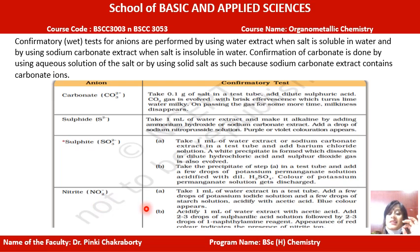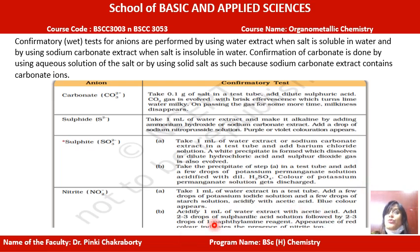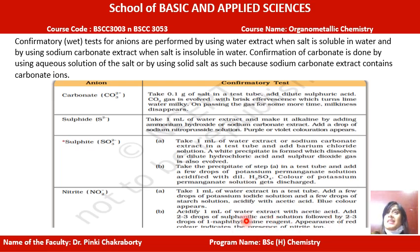Next is NO2⁻, nitrite confirmatory test. We take 1 ml of the water extract, add dropwise potassium iodide solution and a small amount of starch, and since the solution needs to be acidic, we add a small amount of dilute acetic acid. If the blue colour appears, that confirms nitrite is present. In the second part, acidify 1 ml of the water extract with acetic acid, add 2 to 3 drops of sulphanilic acid — which is rare in laboratories — followed by drops of 1-naphthylamine reagent. The appearance of an intense colour confirms nitrite.